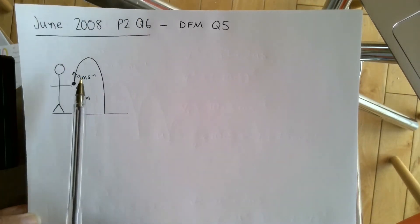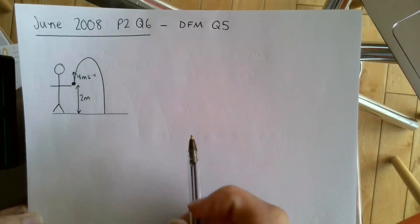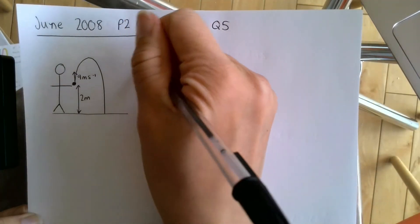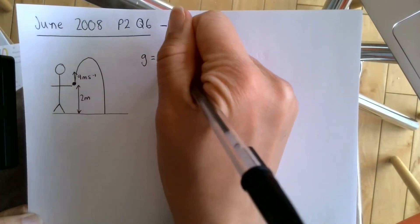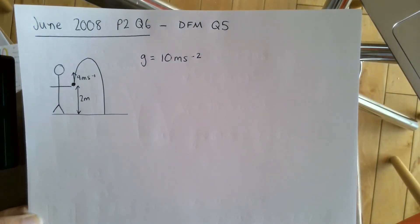It's modeled as a particle and it's moving freely under gravity, and the acceleration due to gravity is used as a magnitude of 10. Here for my acceleration, it's told me to use 10 meters per second squared instead of 9.8 that we normally use.